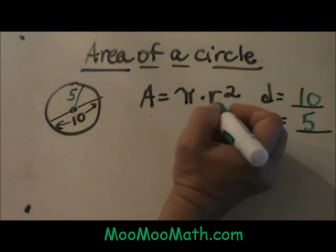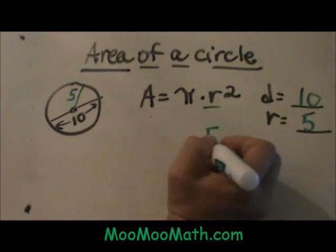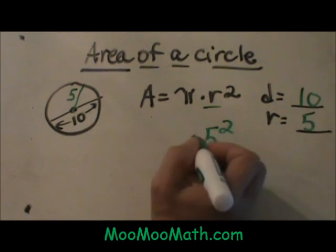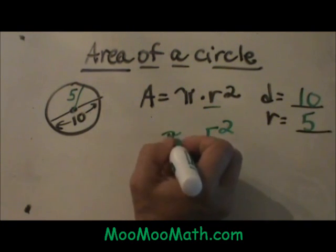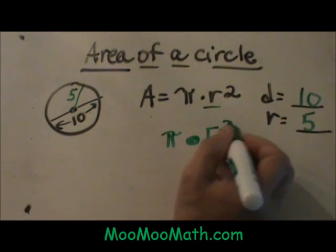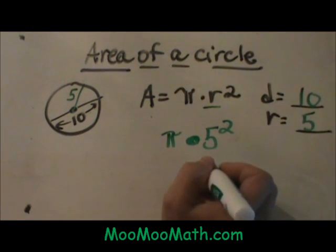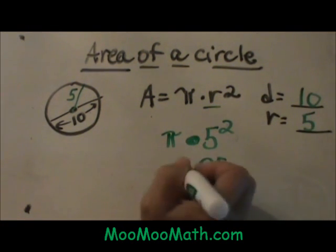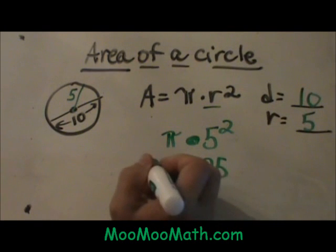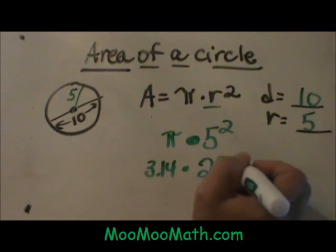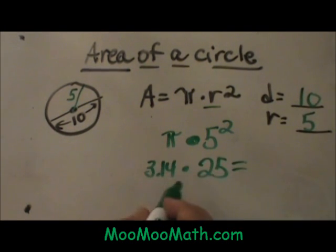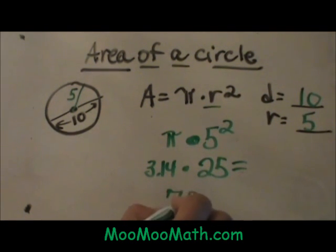Now let's plug in the radius as 5 squared and multiply that times pi. 5 squared is not 10, it is 25, times 3.14. So the area of the circle is 78.5.